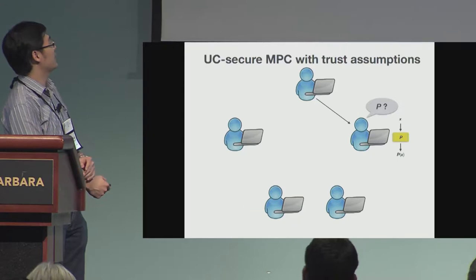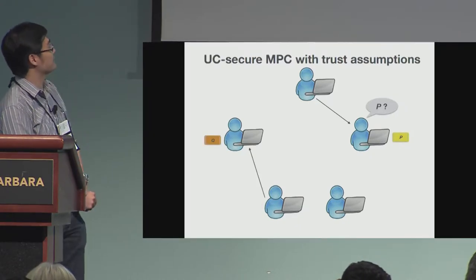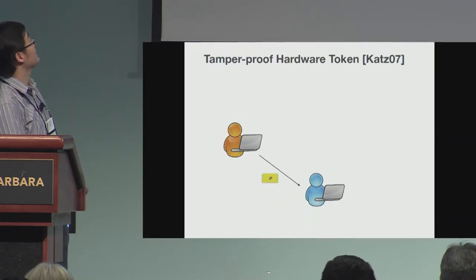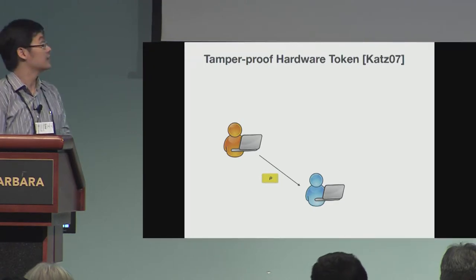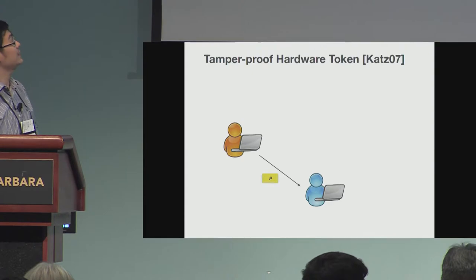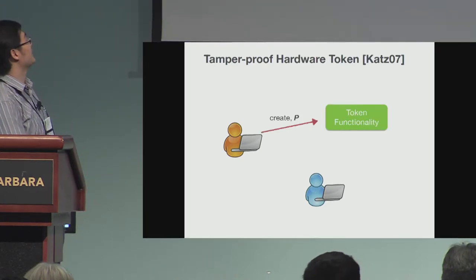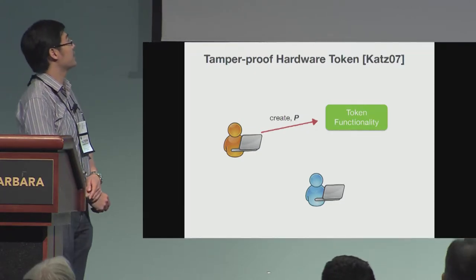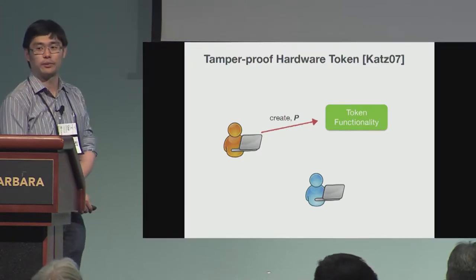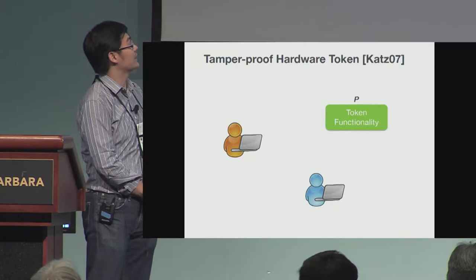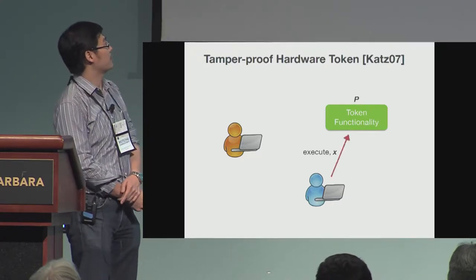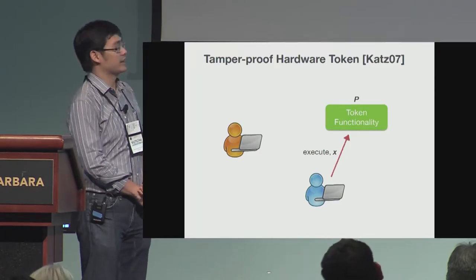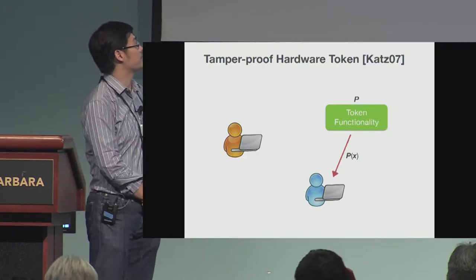A number of parties can construct these tokens and send them around to execute the MPC protocol. This is the tamper-proof hardware token model by Katz. Formally, there is a token functionality: when a party wants to create a token for a program P, he sends a message to the token functionality with the description of P. The functionality memorizes this description, and then the receiver can ask the functionality to execute program P on any input X, receiving P(X) in return.